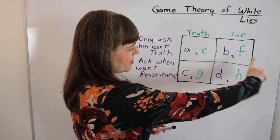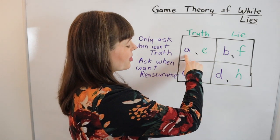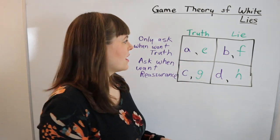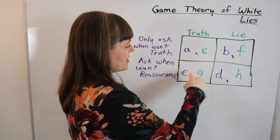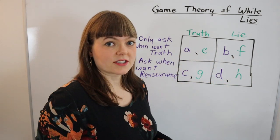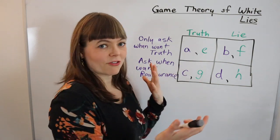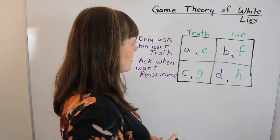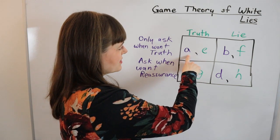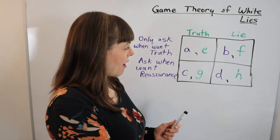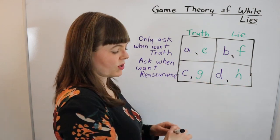Now I've set up the game theory matrix with letters because that's how we build these numbers in from scratch. So the girlfriend's payoffs A, B, C, and D are going to be different, and those are the numbers we actually need to come up with. So the trick here is to figure out what's her favorite box and what's her least favorite box and what's in between.